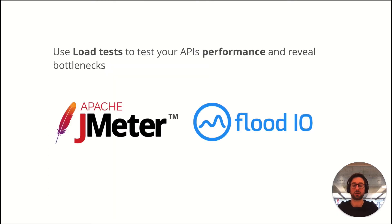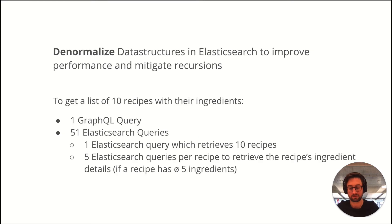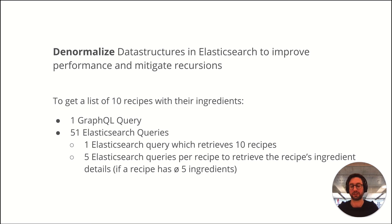If you are set up, use load tests to uncover performance issues and bottlenecks. With that, we uncovered a previously unseen recursion. Because as we started, ingredients and recipes were kept in different Elasticsearch indices, as the data structure suggested. So one single GraphQL query to retrieve a list of 10 recipes with their ingredients would end up in up to 51 separate Elasticsearch queries.